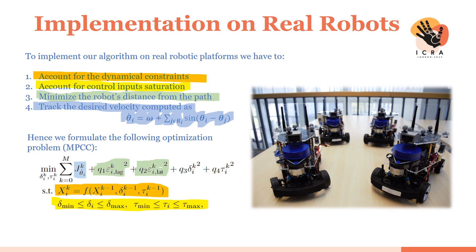Hence we minimize a cost function which accounts for the desired velocity theta dot and the distance from the desired path, imposing the dynamical constraint and the control input saturation as well.